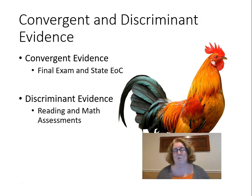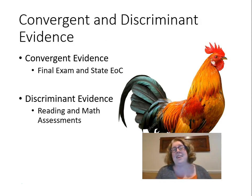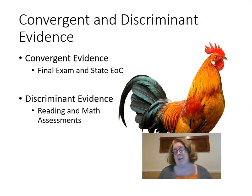We might also get discriminant evidence by giving a test to two different populations. If I gave a physics test to education majors and physics majors and they got the same scores, I'd think either my education students know a lot about physics or I didn't make a very good physics test. I would expect different scores between those two groups. Similarly, if I gave an education test to physics majors, I wouldn't expect them to do nearly as well as education majors.